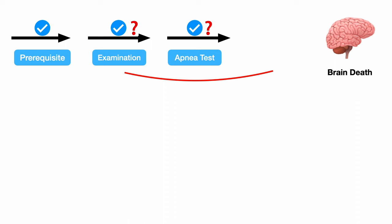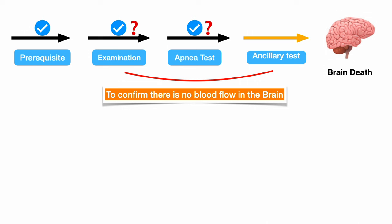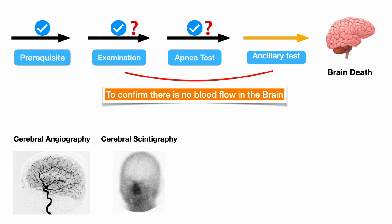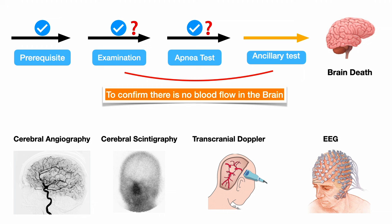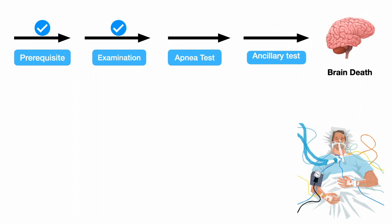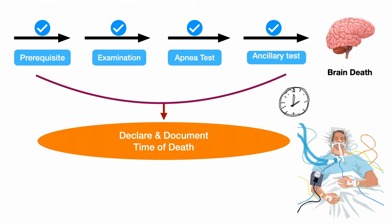The ancillary test confirms there is no blood flow in the brain, using either cerebral angiography, cerebral scintigraphy, transcranial Doppler, or EEG. Once all the criteria are met, the patient can be declared brain dead.